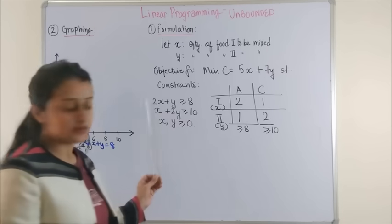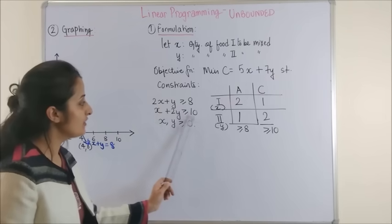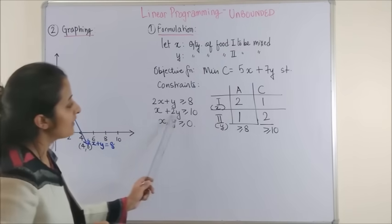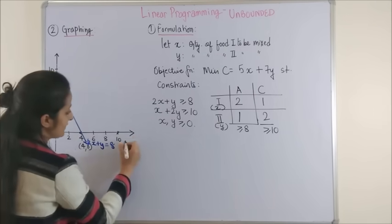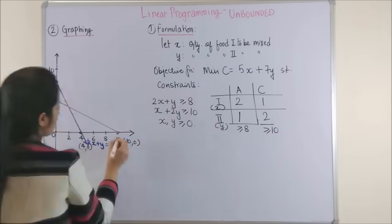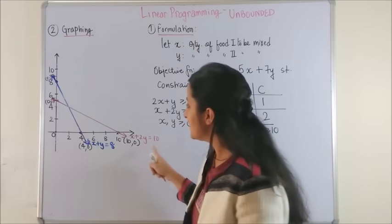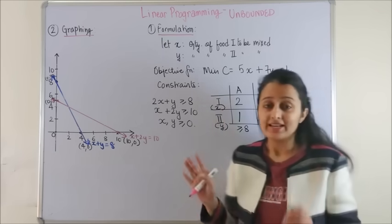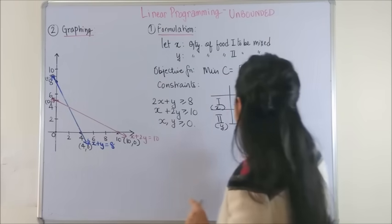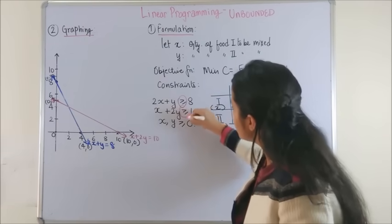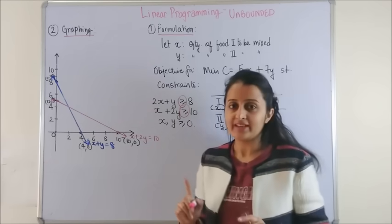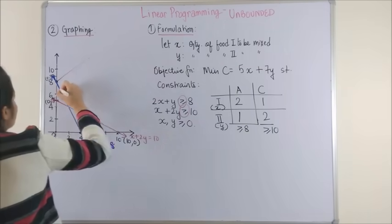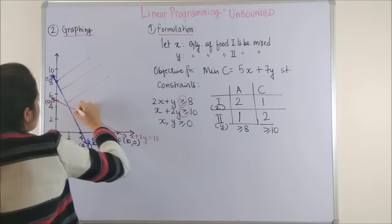Next, let's move to constraint number 2. So when x is 0, y is 5, and when y is 0, x is 10. On joining these two points and labelling the line, this is what we get. Now, let's see, it says greater than or equal to 8 and 10 everywhere. So that means it's an unbounded region. This is the common part.